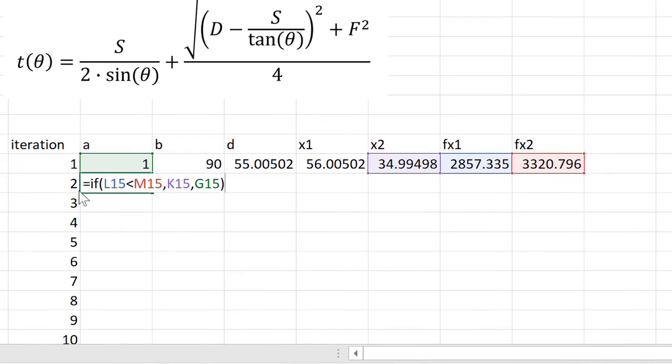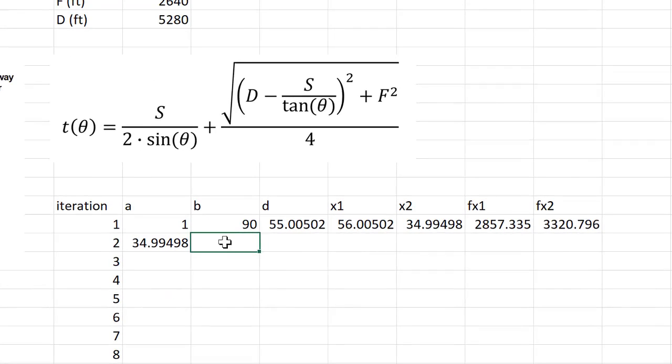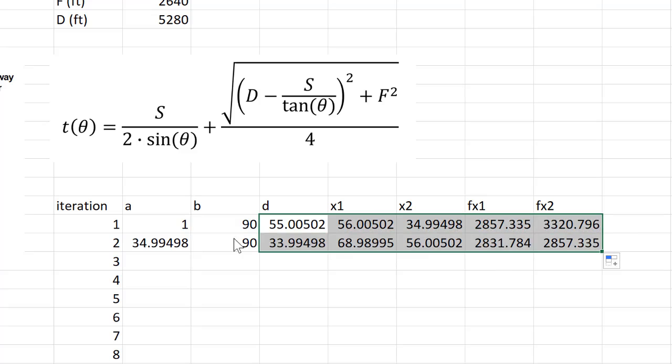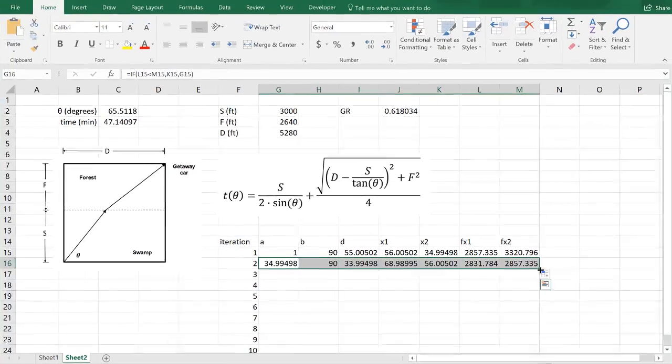We have our conditional statement to set the new a in the next iteration. So if f of x1 is less than f of x2, we're going to be cutting out a portion on the left part. And in that case, if that's true, then the new a is going to be x2, otherwise it's just going to be the old a. And now I can put my conditional statement in here for the next b. So if f of x1 is less than f of x2, again we're removing part on the left side, and in that case the new b is just going to be the old b, otherwise it's going to be x1. Now I can just take this part, this is all just relative formulas, and then I can take the entire row here, and I can double click.